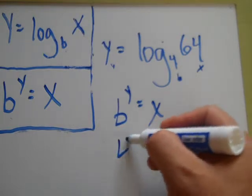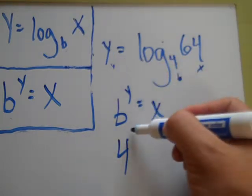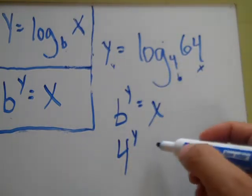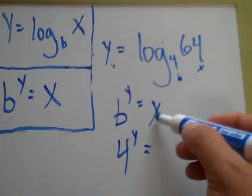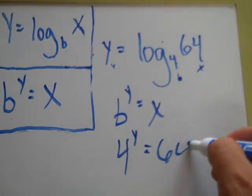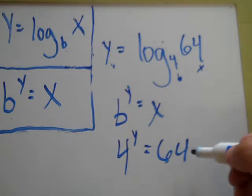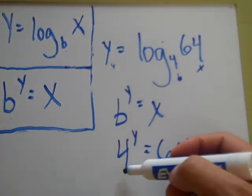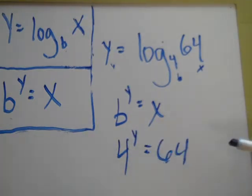Then you know that your base right here is 4. Your exponent is still a mystery, so it's y. But we know that x is 64. All this is asking now is what power do I have to raise 4 to to get 64?